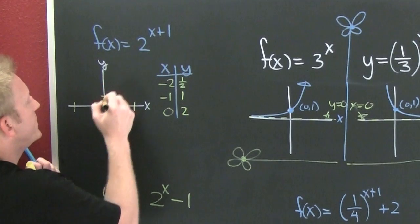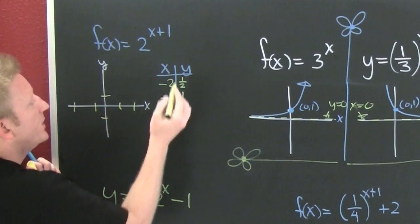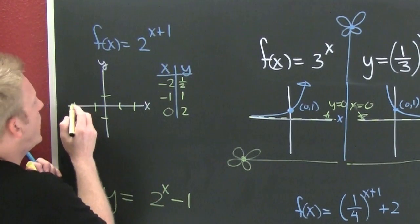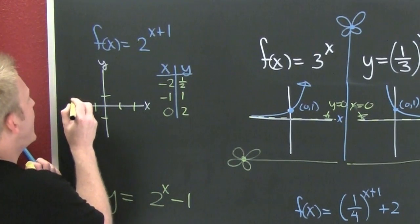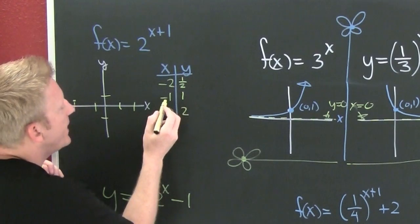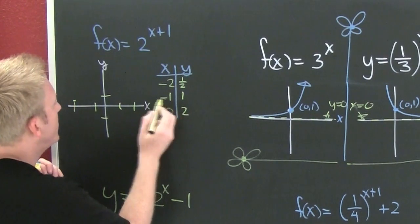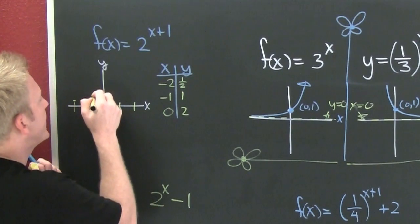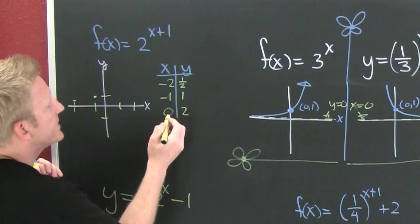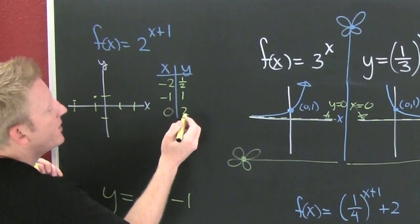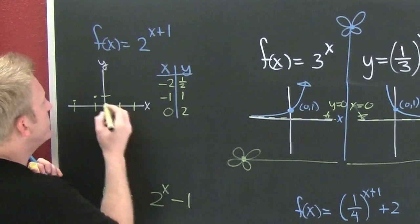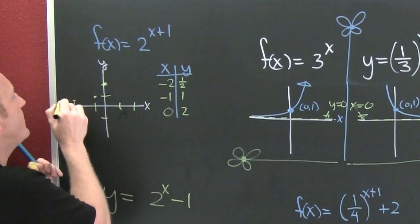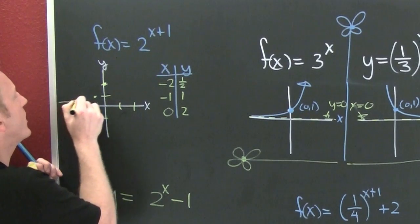Now we plot those three points: X = −2, Y = one-half; X = −1, Y = 1; X = 0, Y = 2. Then we connect them into the exponential curve.